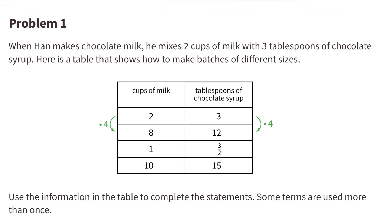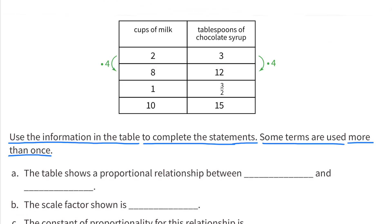Number 1. When Han makes chocolate milk, he mixes 2 cups of milk with 3 tablespoons of chocolate syrup. Here is a table that shows how to make batches of different sizes. Use the information in the table to complete the statements. Some terms are used more than once.